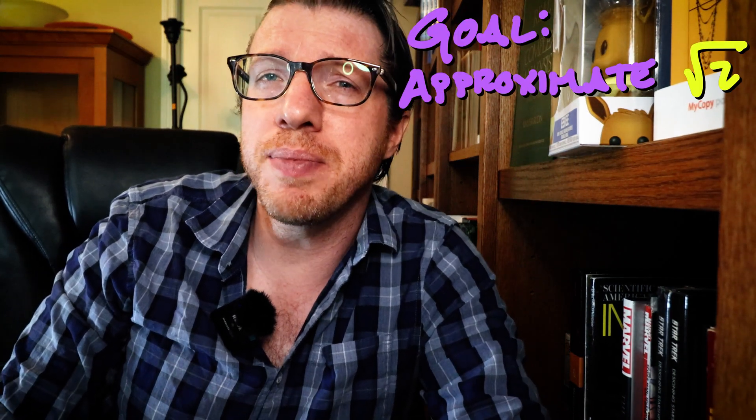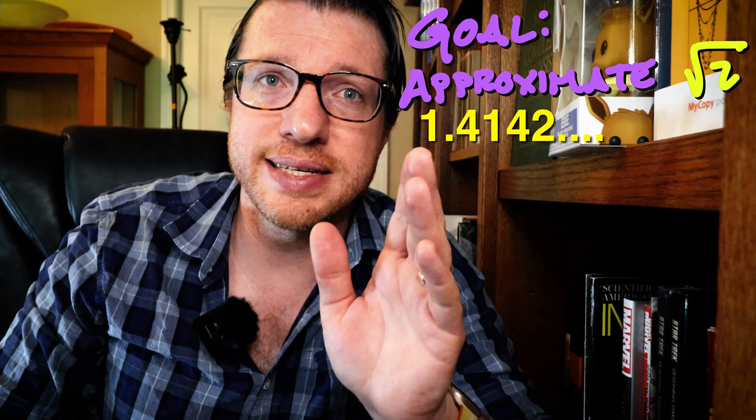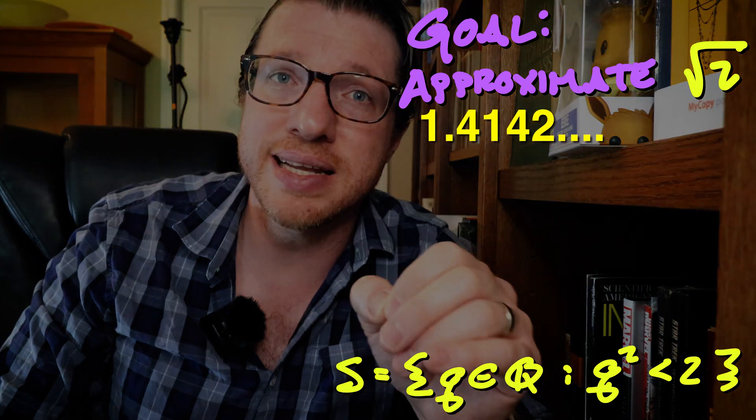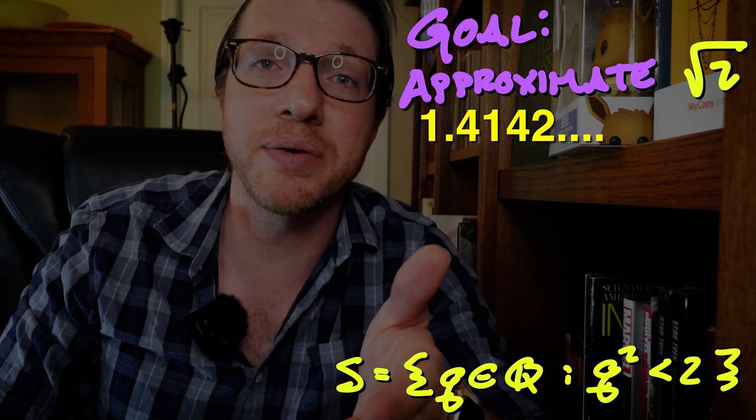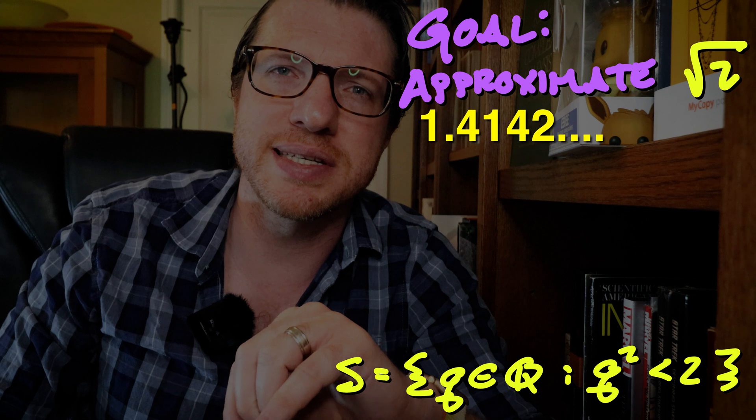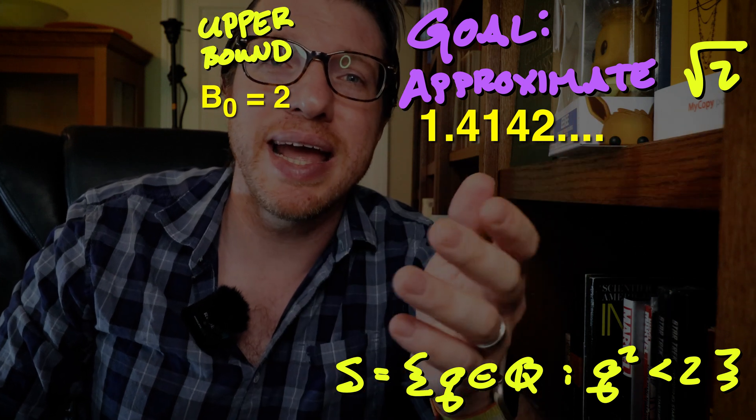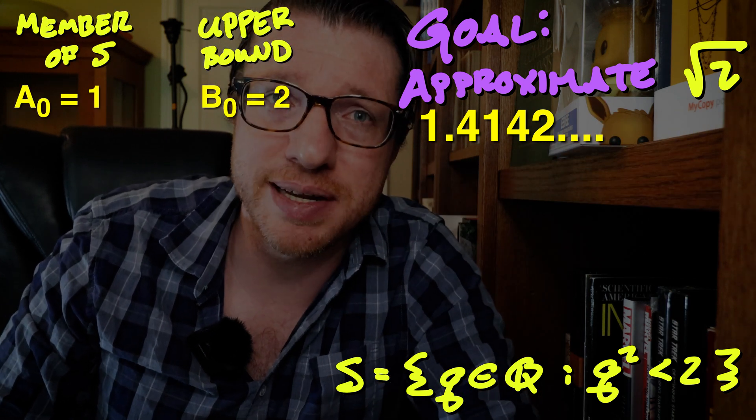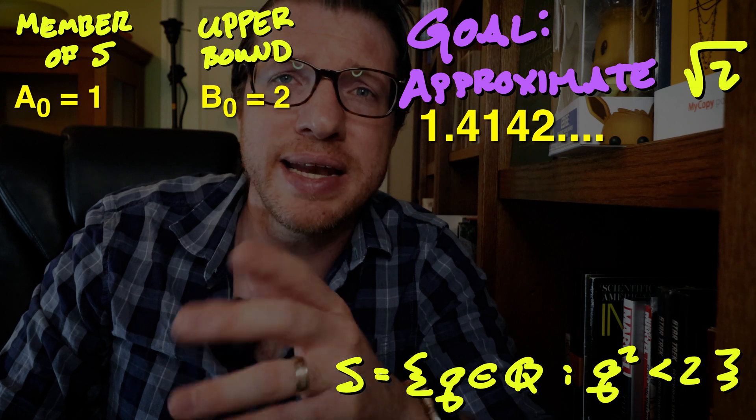Before we get into the details, let's see if this algorithm even works. And we will use it to find an approximation of the square root of 2, which should be about 1.4142. We earlier said that the set of all numbers whose square is less than 2 should have a least upper bound that is the square root of 2. Let's pick an upper bound for this set as, say, 2. And we start with 1 as a member of the set. That is, b0 is 2 and a0 is 1.